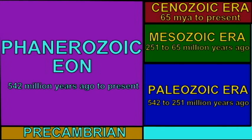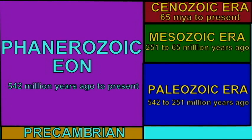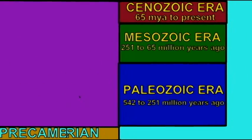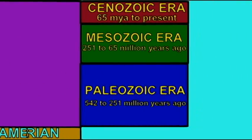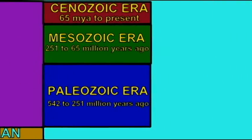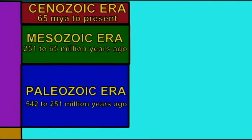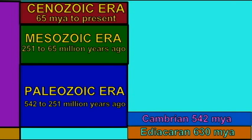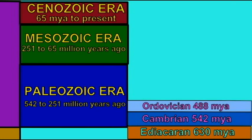Animal life begins at the end of the Proterozoic eon and diversifies during the Ediacaran period. But most of animal history occurs only in the Phanerozoic eon, the last half billion years.